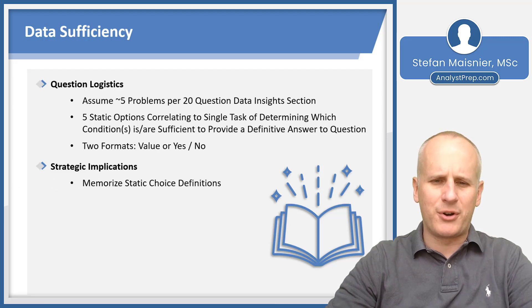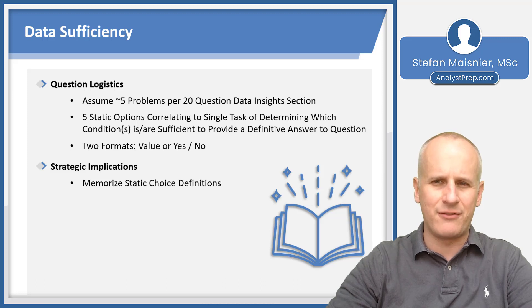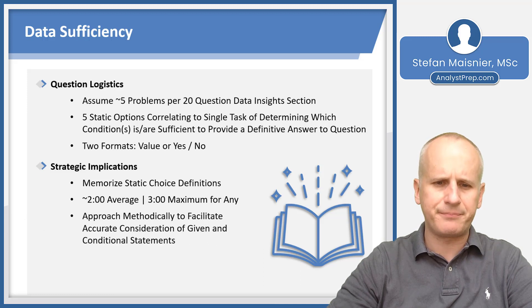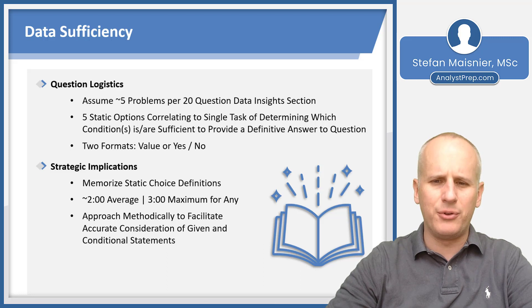Strategically, you're going to first want to memorize the static choice definitions, and we'll talk about that in our data sufficiency lesson, but ultimately you don't want to be revisiting those answer choices on every problem. It's certainly still one of the primary question types that require prepping before taking the GMAT. If you don't know how these question types work, you'll spend more time trying to figure out what the answers are, so you'll have to memorize those choices. You're going to want to assume about two minutes per data sufficiency and a three-minute maximum for any, and you'll want to methodically evaluate these conditions in a consistent fashion so that you'll be able to get through it in a reasonable amount of time.